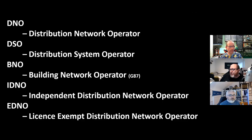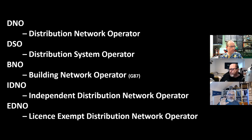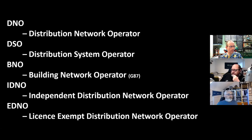Each DNO has their own library online where you can download back-catalogue copies and subscribe to updates on safety bulletins. Whether it's UK Power Networks or Scottish Power Networks, the URL is g81.uk — you can register for it. There are tons of resources available through that.